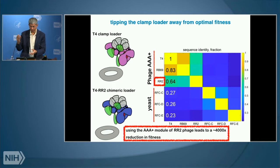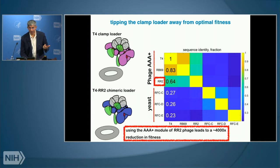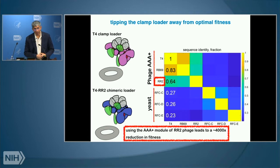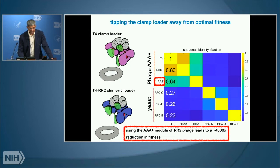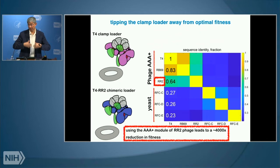In the chimeric clamp loader, the AAA-plus unit comes from another clamp loader, but the collar domains — which oligomerize — are from T4, the green CLASP subunit is from T4, and the sliding clamp is from T4. When swapping in eukaryotic clamp loaders that are quite sequence-divergent, you get complete loss of function — no phage to sequence. But for a particular phage called RR2, which is 64% identical in sequence to T4, swapping it in gives a 4,000-fold reduction — enough to purify phage. Doing a second round of competition, Subu was able to grow up the winners and sequence them.